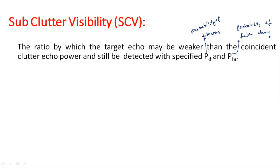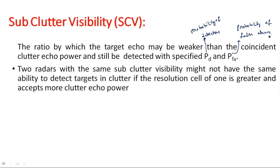Two radars with the same sub-clutter visibility might not have the same ability to detect targets in clutter if the resolution cell of one is greater and accepts more clutter echo power. Even with the same sub-clutter visibility factor, the ability to detect targets among a large number of clutters may differ because each radar has its own specific resolution. The clutter may have the same strength onto both radar systems, but the received target information may differ because of the difference in resolution.